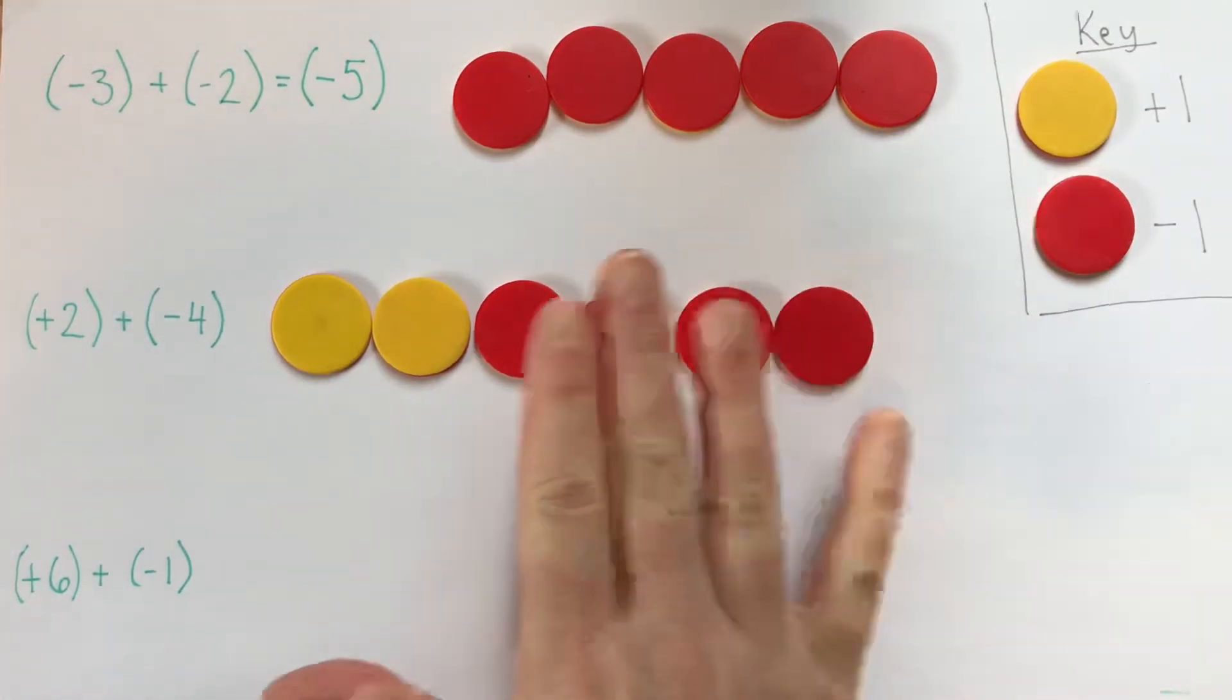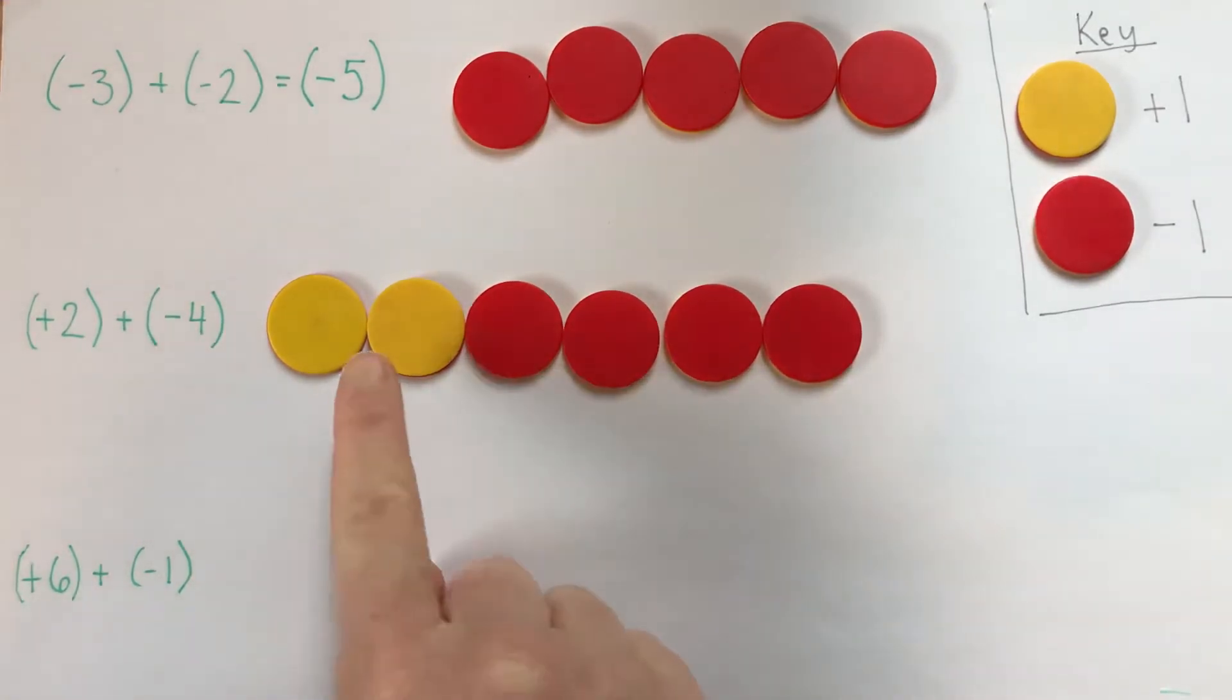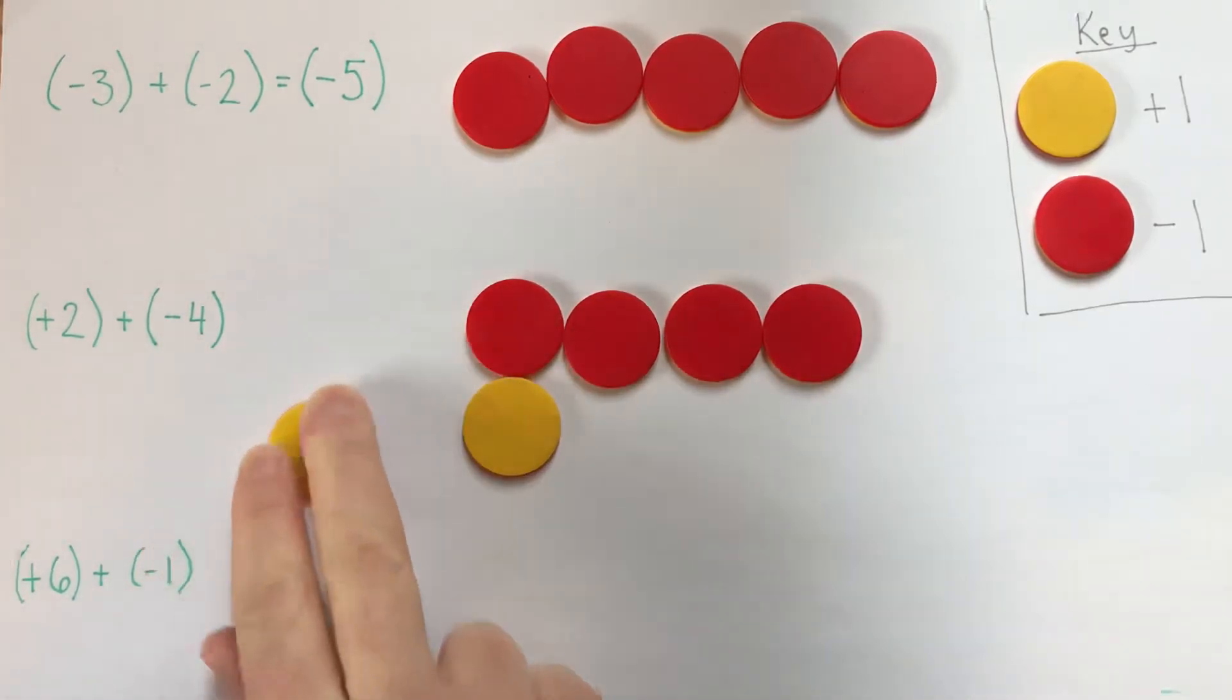We just need to answer what number this is. When I have some positives and some negatives in the same number, I like to organize them so that I can see my zero pairs really easily.